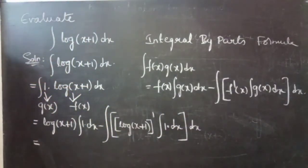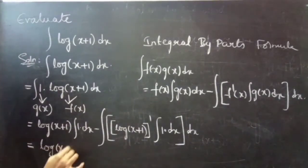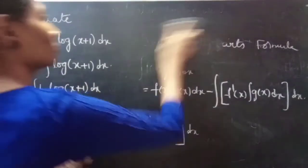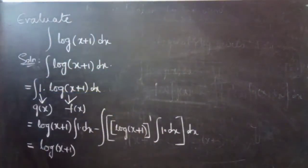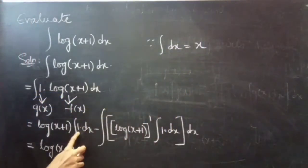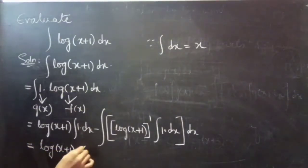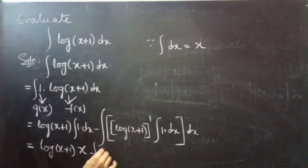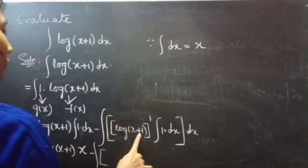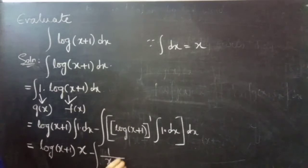This equals log(x+1) — since we know that integral dx is x, so integral of 1 dx is x — so we write x minus integral of the derivative of log(x+1), which is 1/(x+1).